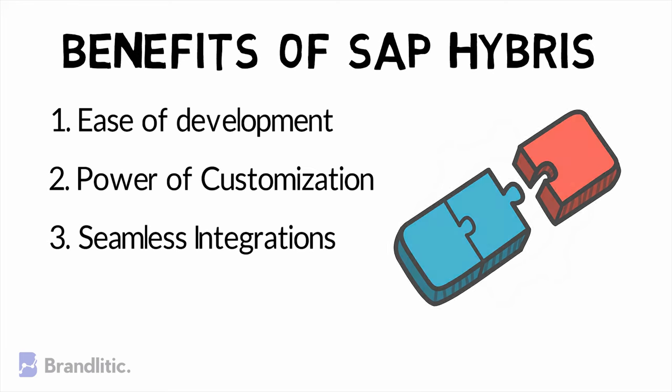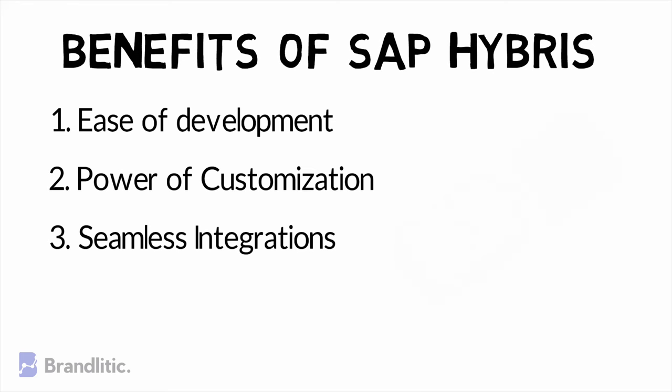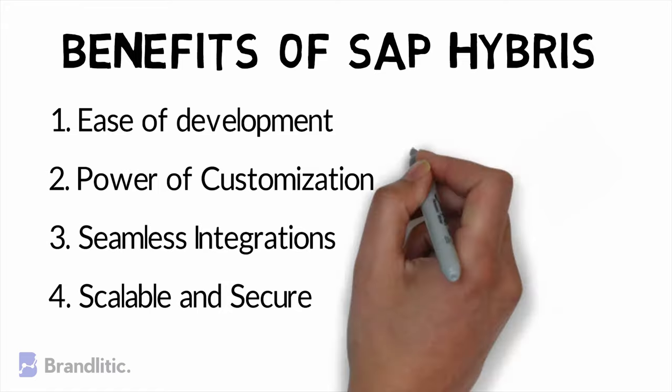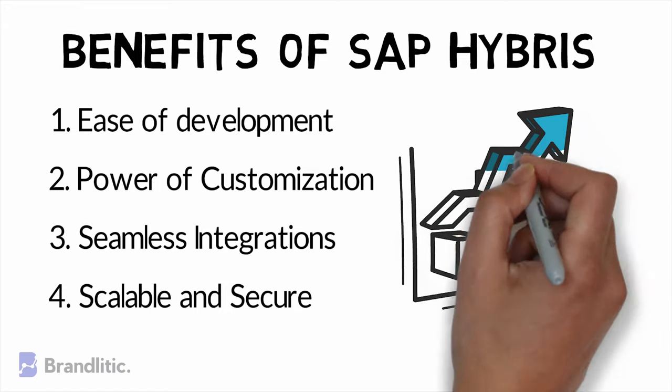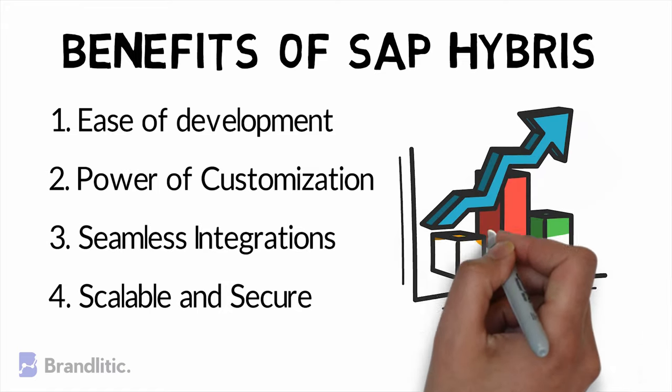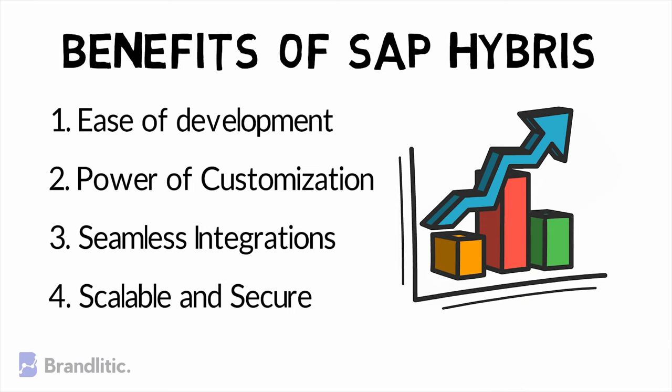Fourth, it is scalable and secure — the SAP Hybris platform is designed to support B2B and B2C workloads for scalability and high-order volumes. It is also highly customizable, offers great authenticity and access control framework, making it powerful in terms of security.